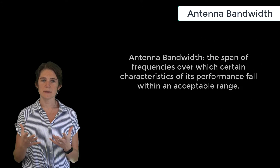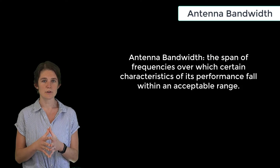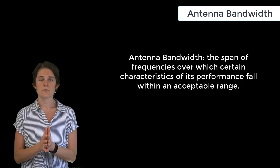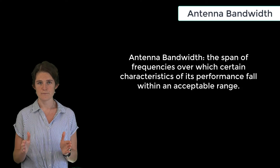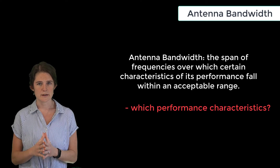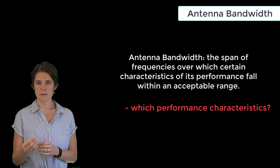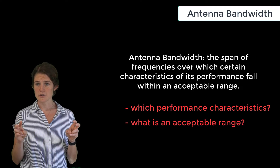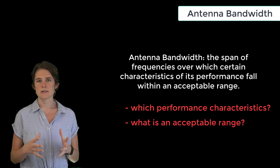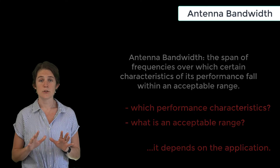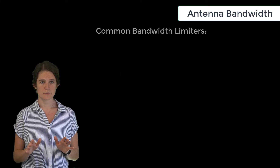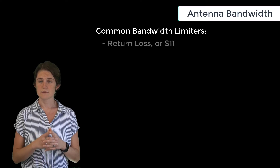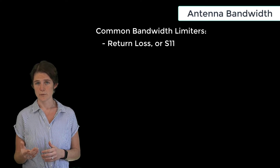An antenna's bandwidth is the span of frequencies over which certain relevant characteristics of its performance fall within an acceptable range. The particular performance characteristics considered when defining bandwidth, and the acceptable range of variation in these characteristics, varies depending on the application. The most common performance characteristic considered when defining an antenna's bandwidth is its return loss, or S11.